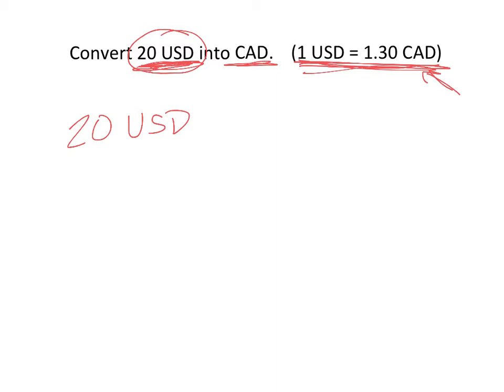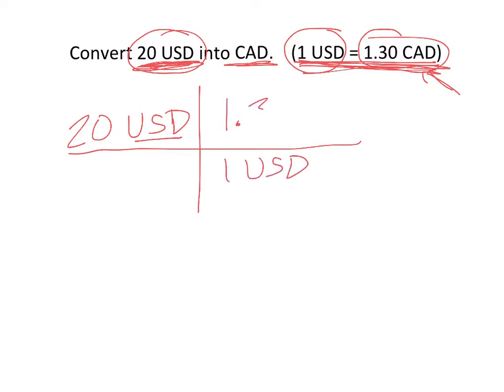So to convert, we're going to set up what's called a fence post, or it's basically multiplying by a fraction. U.S. dollars is a unit we no longer want. We want to cancel it. So we're going to take this exchange rate. And one of these is going to go on the top of the fence, and the other is going to go on the bottom. If you're in U.S. dollars, you want to cancel U.S. dollars. So we'll put the one U.S. dollar down below, and that means we're going to put the 1.30 Canadian up above.